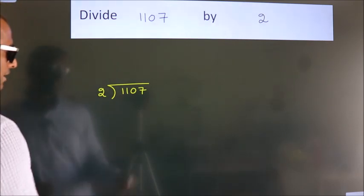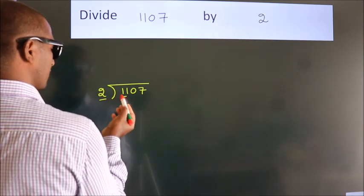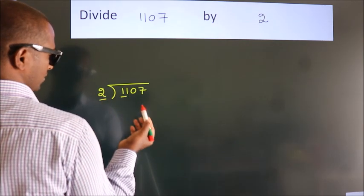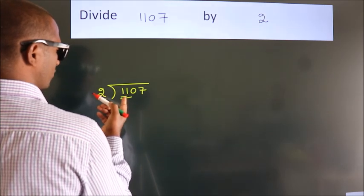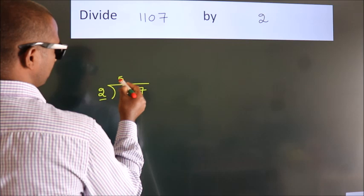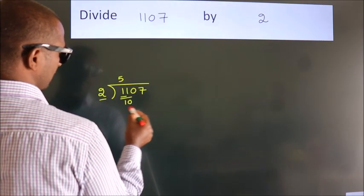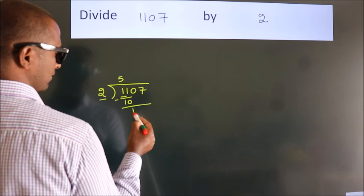Next, here we have 1, here 2. 1 smaller than 2. So we should take 2 numbers, 11. A number close to 11 in 2 table is 2 times 5 equals 10. Now we should subtract. We get 1.